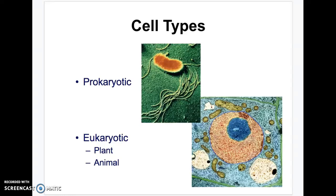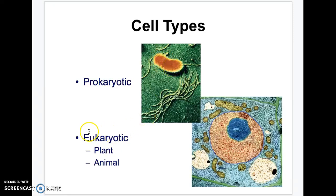There are two main types of cells: prokaryotic cells and eukaryotic cells. Prokaryotic — 'pro' rhymes with 'no' — that means there's no nucleus. They are so simple; literally all they have is DNA and some ribosomes. Eukaryotic — 'eu' rhymes with 'do' — and 'do' means they do have a nucleus. These are plants and animal cells. You are an animal, so you have a eukaryotic cell.